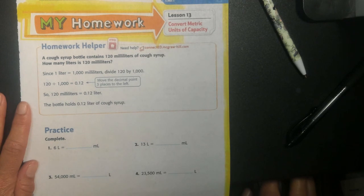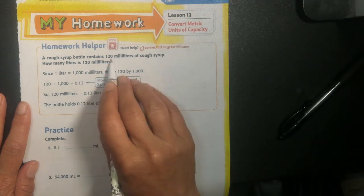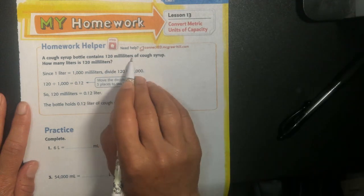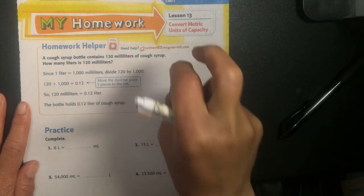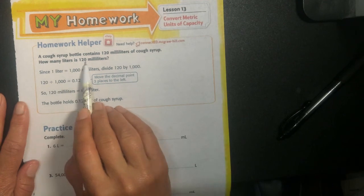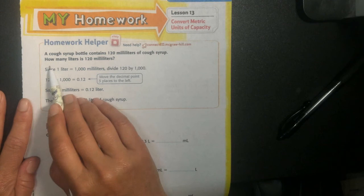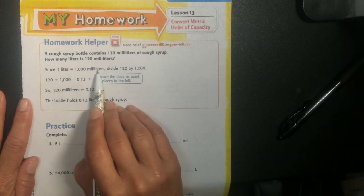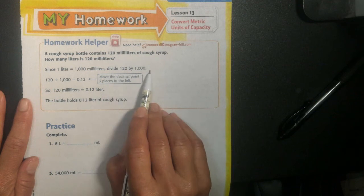We're talking about a bottle of cough syrup. It contains 120 milliliters of cough syrup. If I had little droppers, I'd have 120 little drops in this bottle. Since 1 liter equals 1,000 milliliters, I'm going to divide 120 by 1,000.